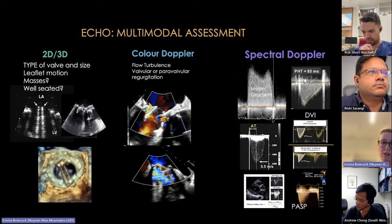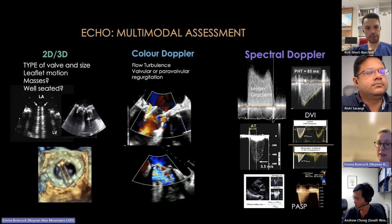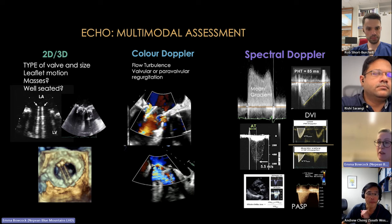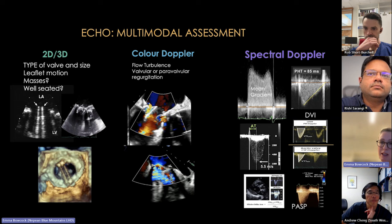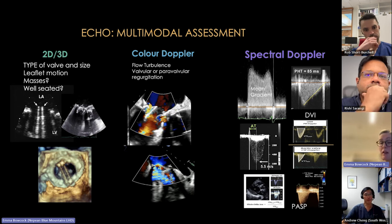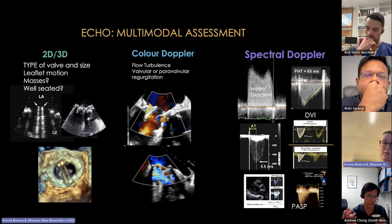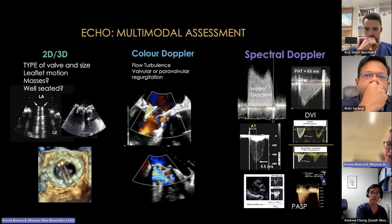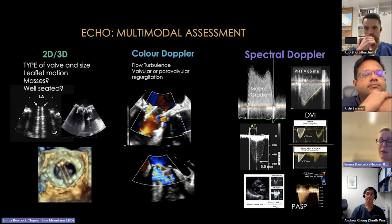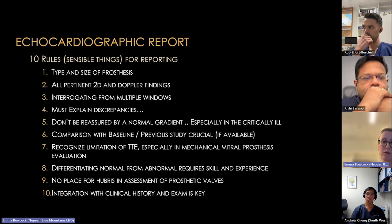Echo assessment of prosthetic valves uses a multimodal approach: 2D, 3D, color Doppler, and spectral Doppler. Think of it like a jigsaw puzzle — take the clinical context and put all the pieces together. Sometimes the 2D findings look completely different from the spectral Doppler findings, and you must explain those discrepancies rather than ignoring them.